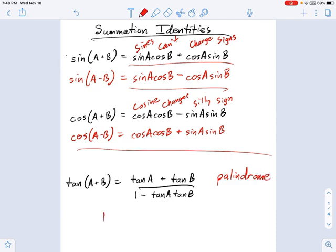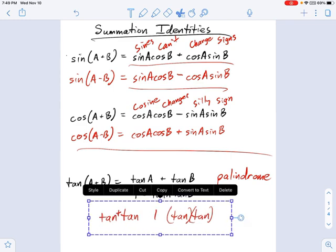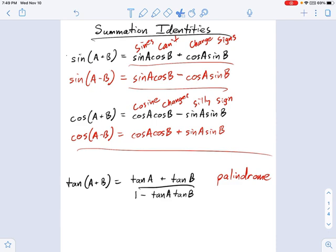Because I think palindromes are fun, right? If you say tan-tan-one-tan-tan, see? Same forwards and backwards. Now, these tans are multiplied. Tangent times tangent. These tangents are added together. But, you know, it's the best I've been able to come up with. So if you like palindromes, maybe tan-tan-one-tan-tan is going to help you out.